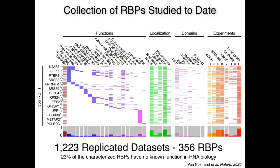This is an overview of all the experiments we've performed to date. We've generated at least one confirmed dataset of those five different experiment types for 356 different proteins. On the left, we've listed the functions of these proteins based on annotations from the literature. Notably, 23% of the proteins we've studied have no known function in RNA biology other than having a motif suggestive of RNA binding or being identified in a mass spec pull-down. The center depicts localization patterns, next to that are the different domain types, and on the right are the types of experiments performed.